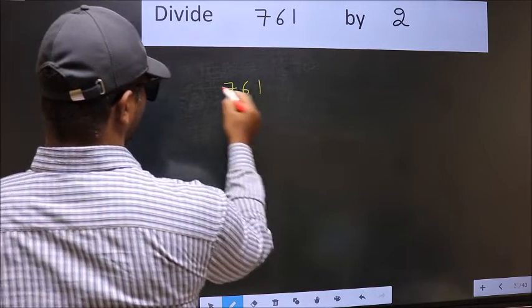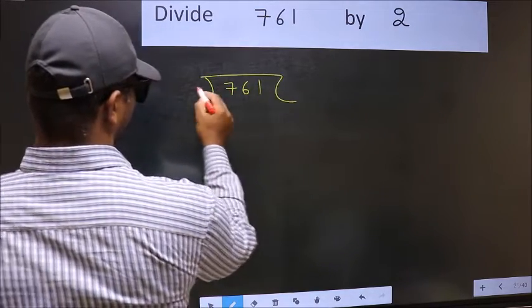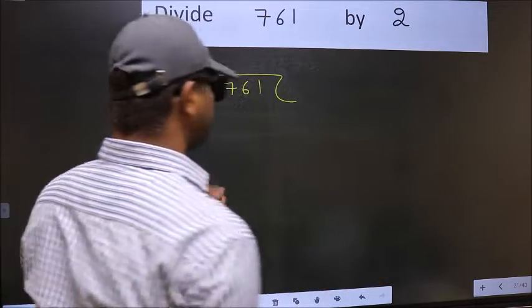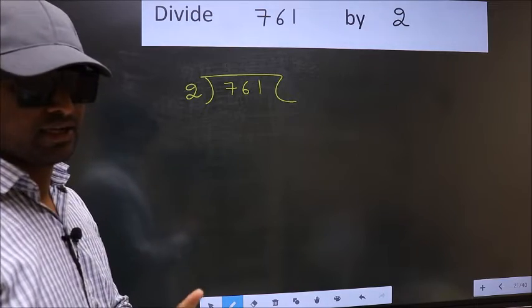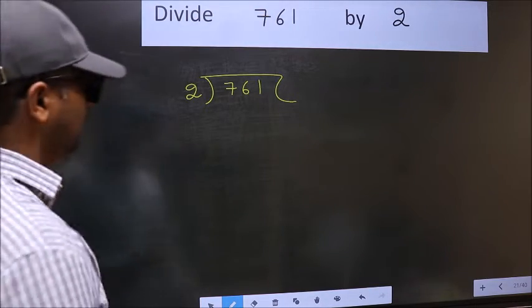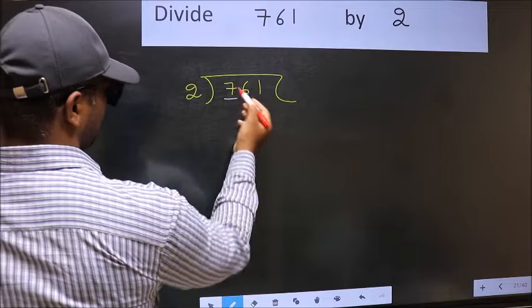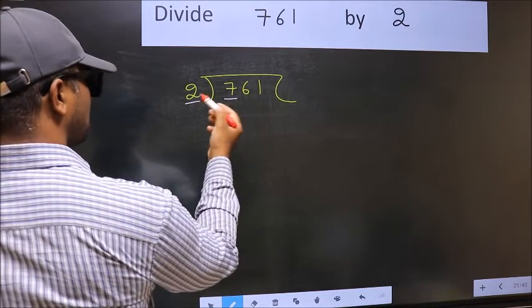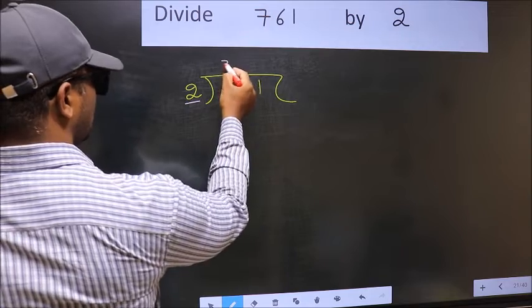761, 2 here. This is your step 1. Next, here we have 7 and here 2. A number close to 7 in 2 table is 2 times 3 is 6.